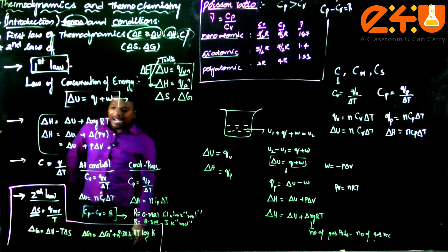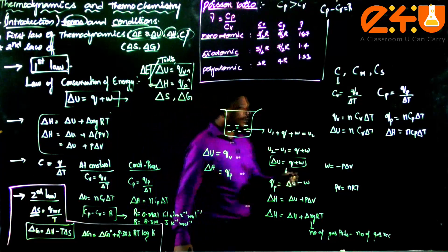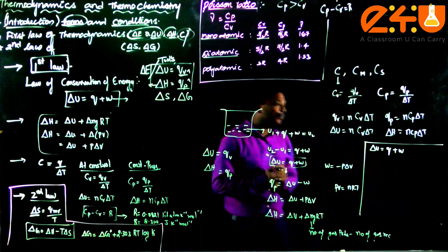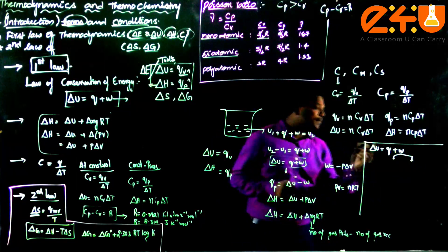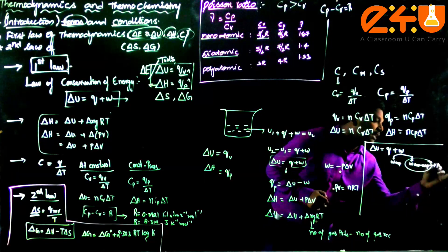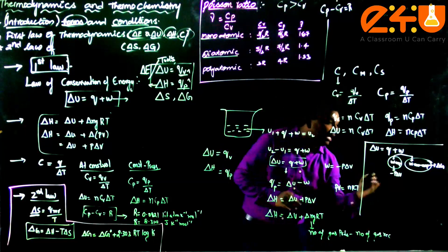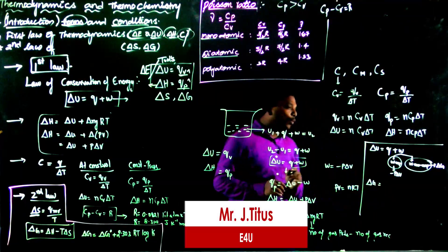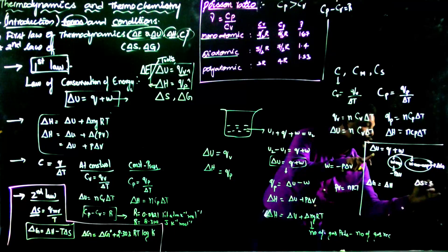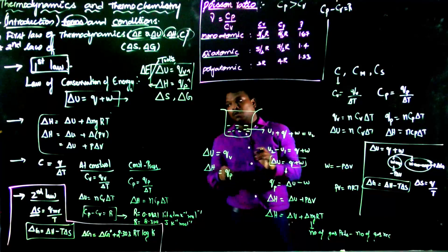From the Second Law, we study ΔS = q_reversible/T and the important formula ΔG = ΔH − TΔS. Deriving ΔG: starting from ΔU = q + w, split work into expansion work (w_expansion = −pΔV) and non-expansion work (w_non-expansion = ΔG, i.e., useful energy). Substituting and using ΔS = q/T gives q = TΔS, leading to ΔG = ΔH − TΔS.